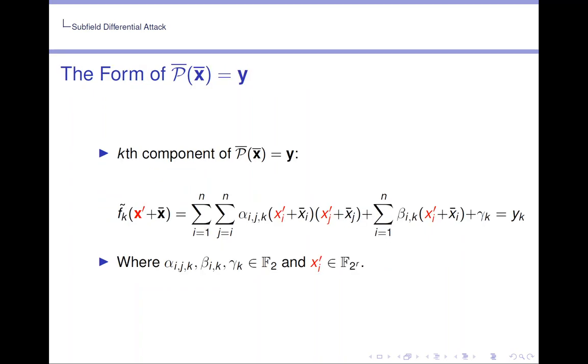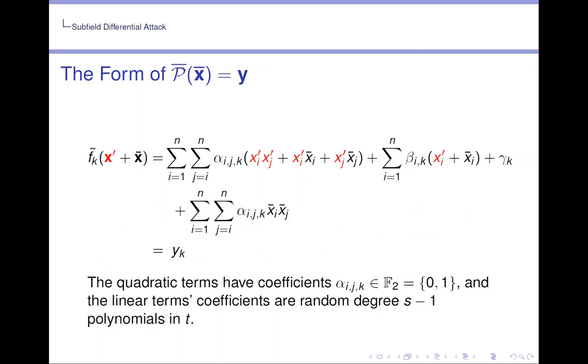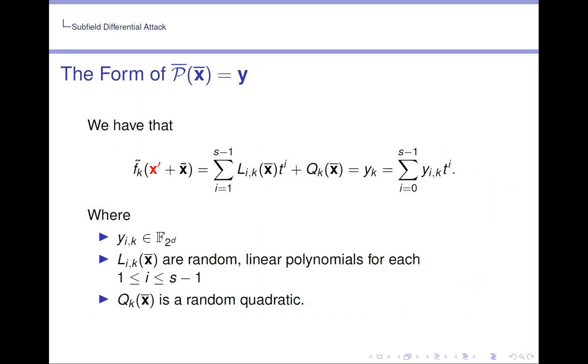So when we look at the form of P̄ equals y, in particular the kth component, we see it's going to, by definition, be F_k tilde evaluated at x' plus x̄. Now rearranging this and separating out the quadratic terms, it will be in this form. And we see that the quadratic terms have coefficients alpha inside F_2, so equal to 0 or 1. And the linear terms coefficients are random degree s minus 1 polynomials in T, because x'_i is randomly selected.